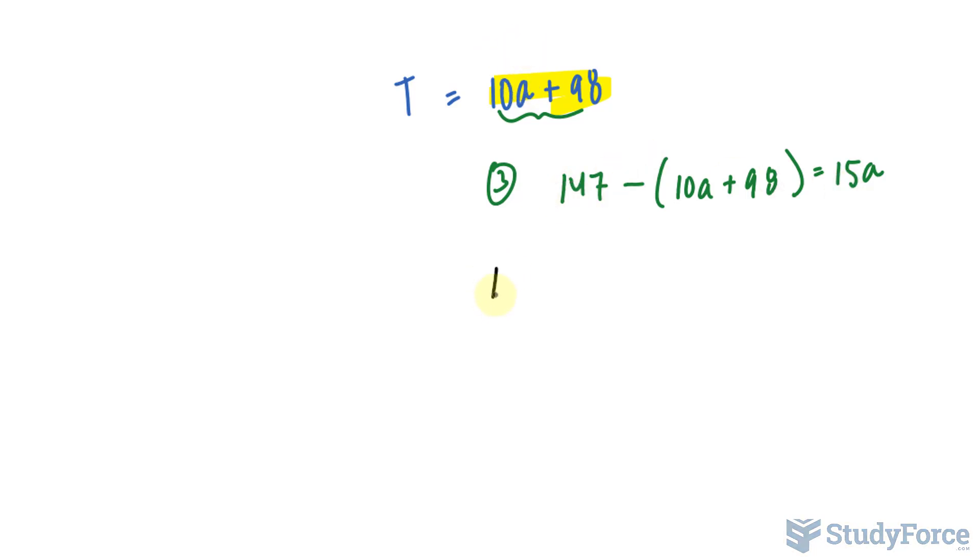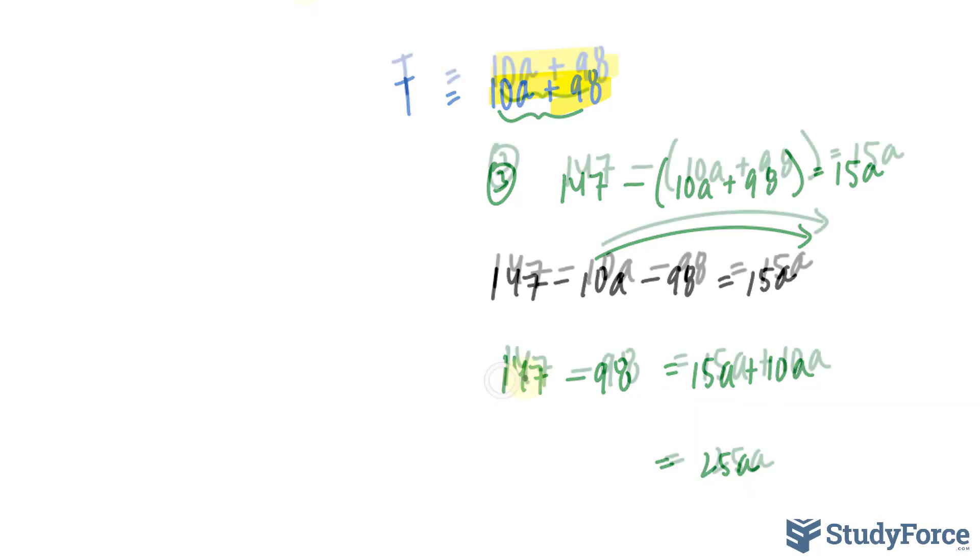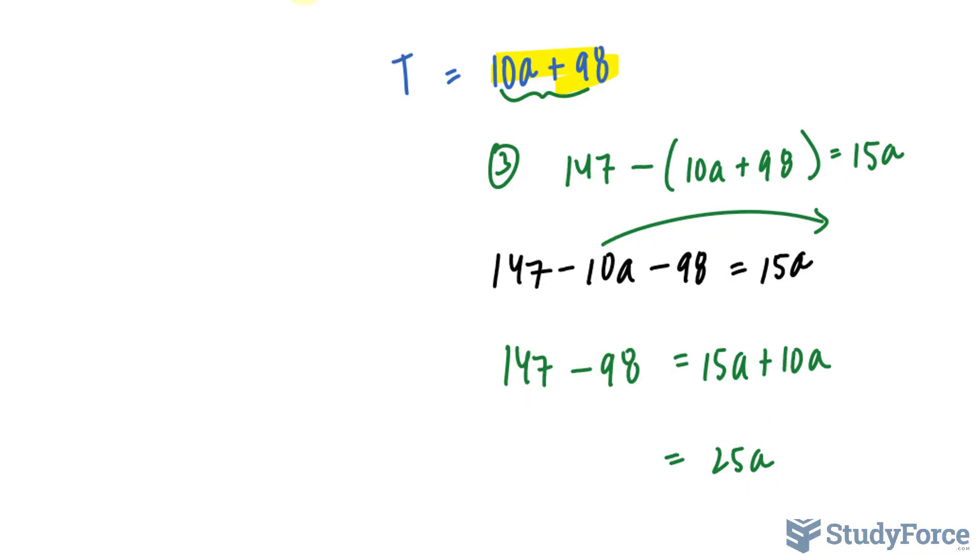Anyway, let's continue with this. 147 minus 10A minus 98 is equal to 15A. Bringing that over, because we want to collect like terms, this is just math from here. 147 minus 98 is equal to 15A plus 10A. That makes 25A, subtracting these two values is 49.